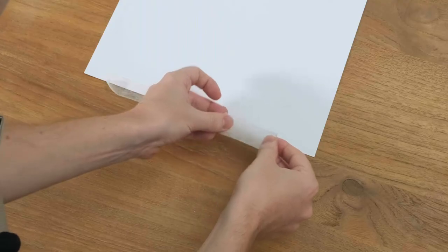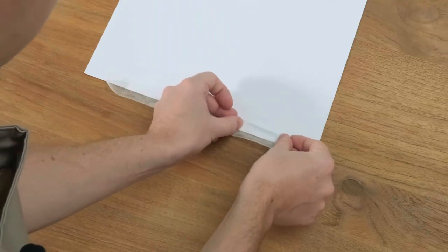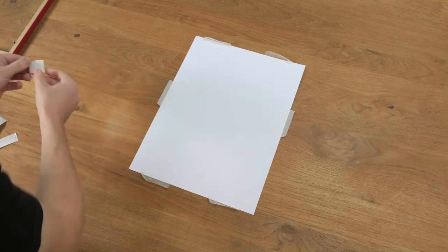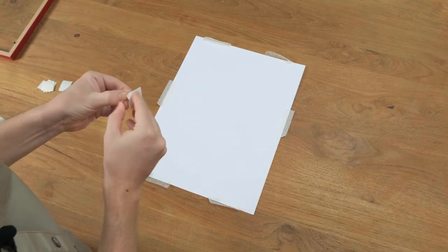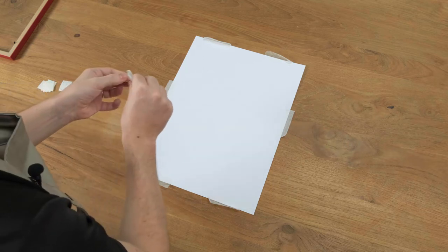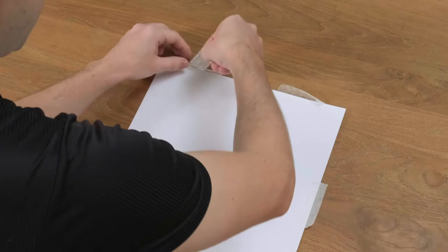Now we've got the large length on, we're going to take a smaller square size. It's the same tape just cut to smaller sizes. Then we're going to create a T shape with the tape.